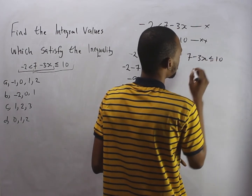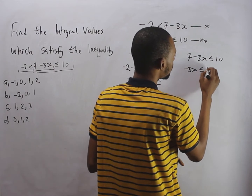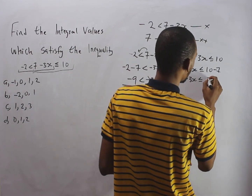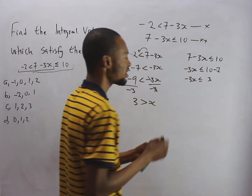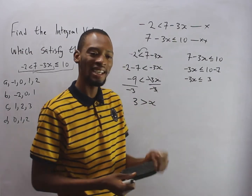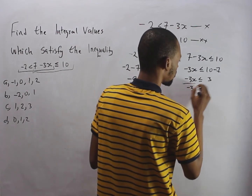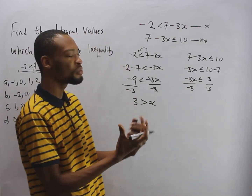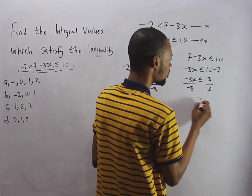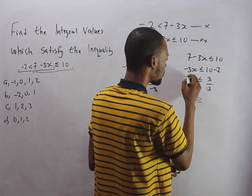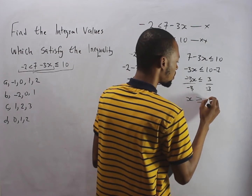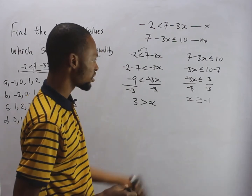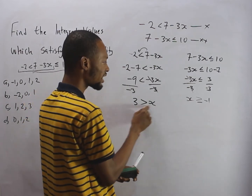Now solving S2: seven minus three s is lesser than or equal to ten. Collecting like terms gives minus three s is lesser than or equal to three. Dividing both sides by minus three again inverts the inequality symbol — lesser than or equal to becomes greater than or equal to. So s is greater than or equal to minus one.